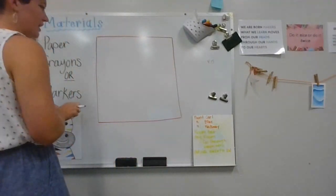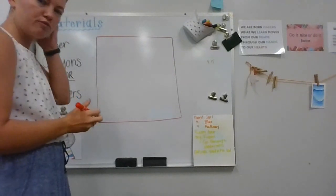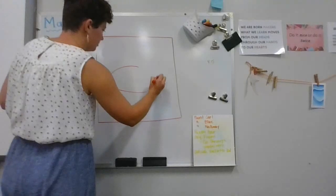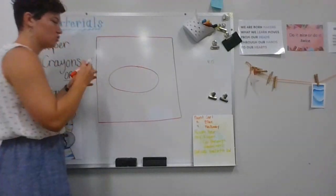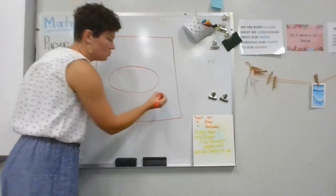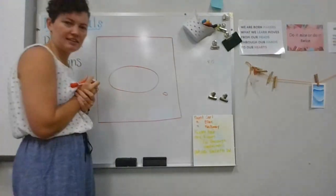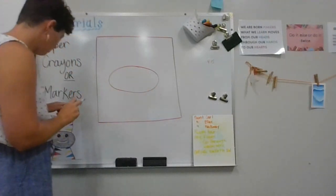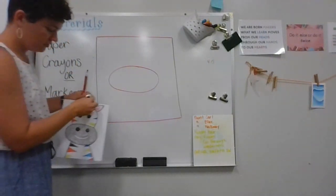All right, so the first thing I'm going to do is I'm going to put an oval in the middle. Now if we remember, our oval is like a stretched out circle. If you notice, it's pretty big. I didn't do one this size, that's way too little.